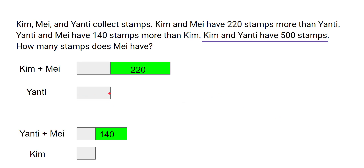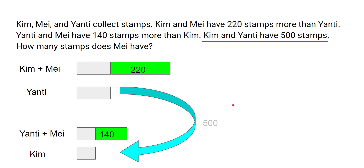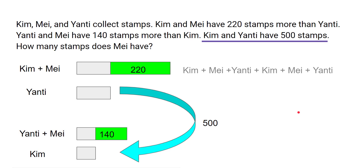Looking at the diagrams, this Yanthi unit and this Kim unit together make 500. The unit sizes are different, but Yanthi here corresponds to the same unit as Yanthi in the second diagram, and similarly for Kim. So both pairs together are 500.